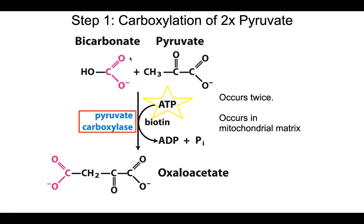The first reaction — carboxylating pyruvate to oxaloacetate — is dependent upon the hydrolysis of ATP. We need bicarbonate as our source of the carboxyl group, and we need an ATP to power this reaction and make it exergonic. It requires the enzyme pyruvate carboxylase. We are carboxylating pyruvate, so it's a pretty easy one to remember. Here's our pyruvate, and we are going to add a carboxyl group from bicarbonate to the methyl group to yield oxaloacetate.